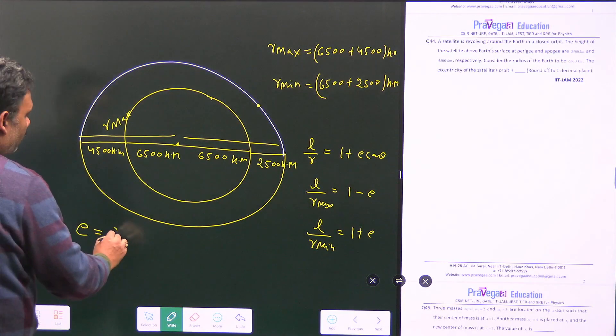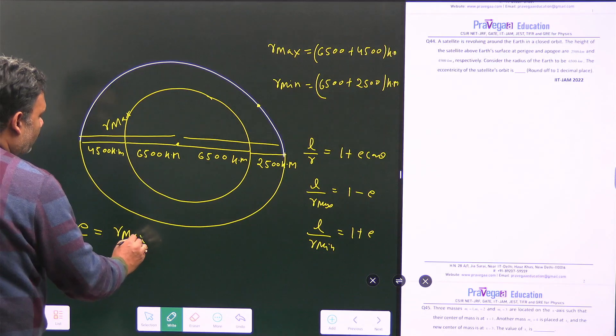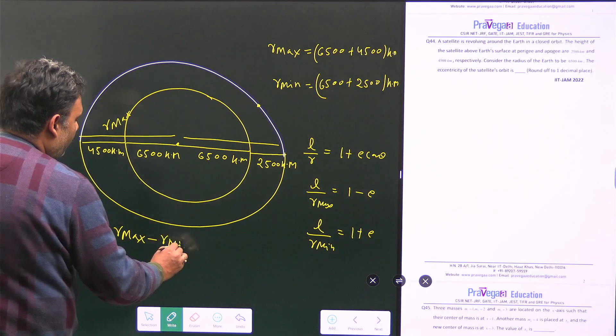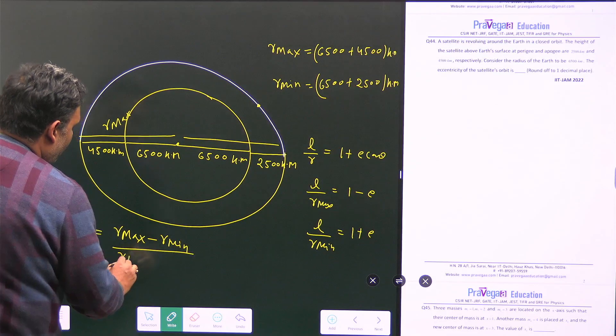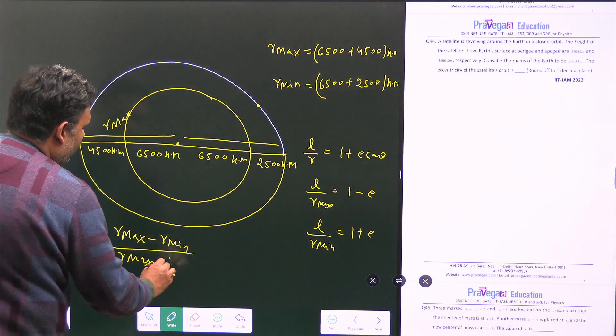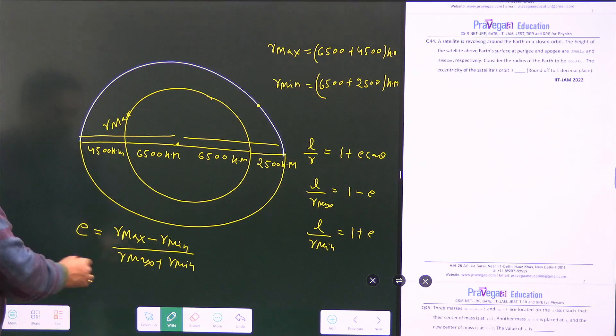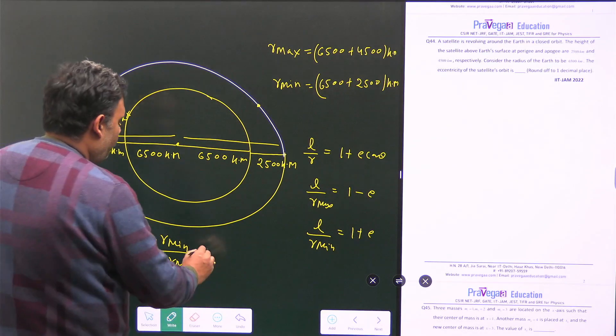And that value is equal to e is equal to r maximum minus r minimum divided by r maximum plus r minimum. So from there, we can find this value.